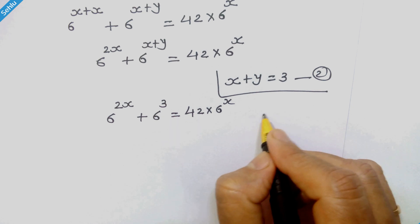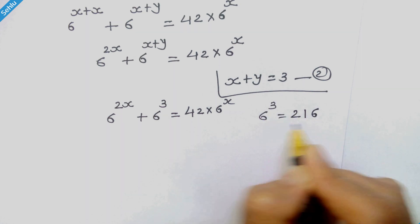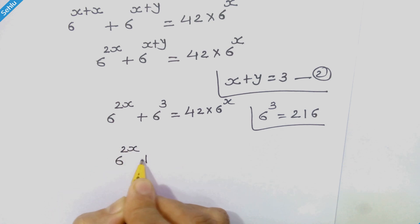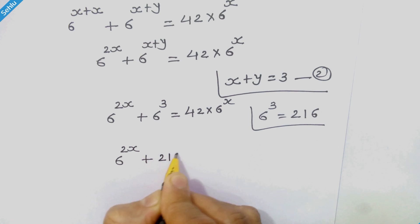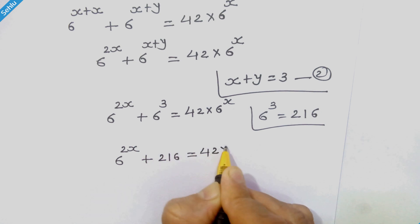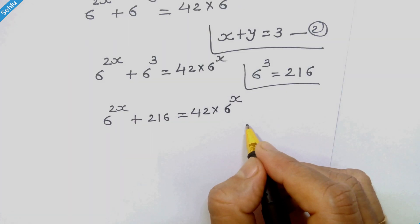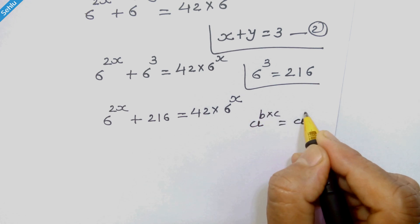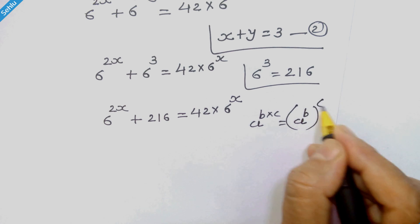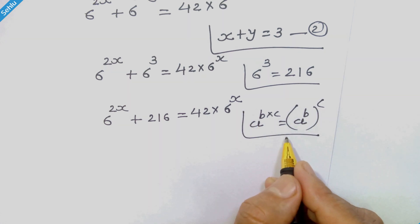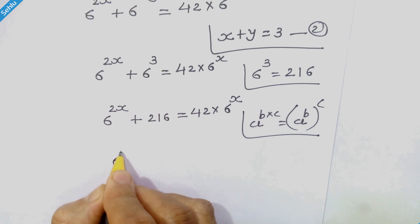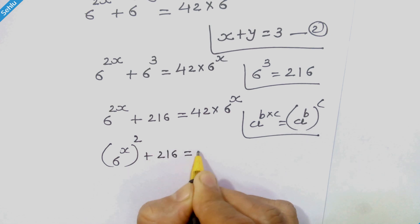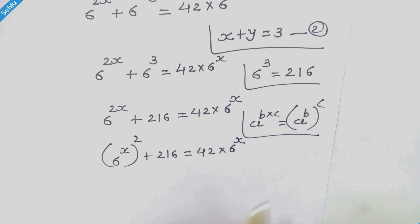Now what is 6 cubed? It is 216. So here we have 6 raised to 2x plus 216 is equal to 42 times 6 raised to x. Now let's recall the rule where a raised to b times c can also be written as a raised to b, whole raised to c. Using this rule, we rewrite 6 raised to 2x as 6 raised to x, whole squared, plus 216 is equal to 42 times 6 raised to x.